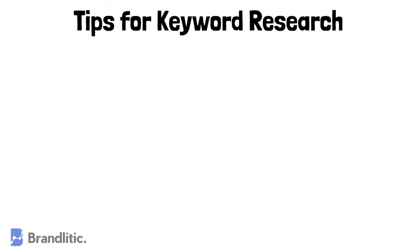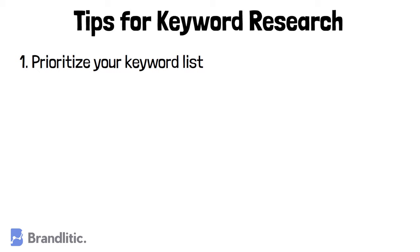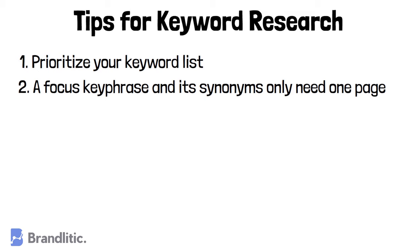Now that you know how to do keyword research, here are a few tips to keep in mind. 1. Prioritize your keyword list — you don't need 1,000 keywords to start with; even 5 is a good start. 2. A focus keyphrase and its synonyms only need one page. In the past, each keyword got its own landing page. But today, search engines are smart enough to use search intent to give searchers the best answers and use LSI to handle synonyms. Check the link in the description to learn more about LSI keywords.